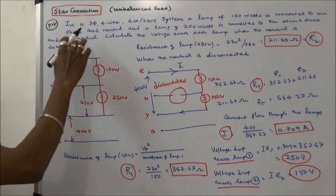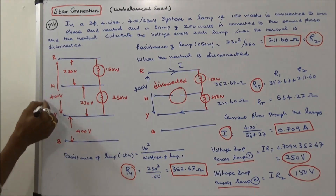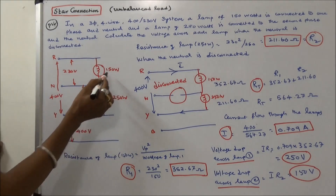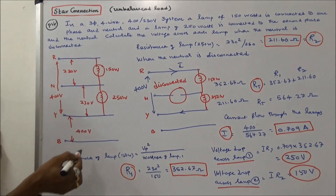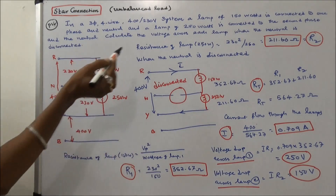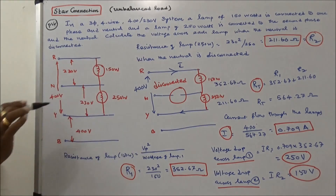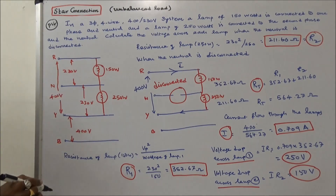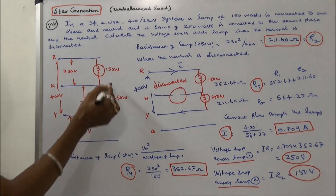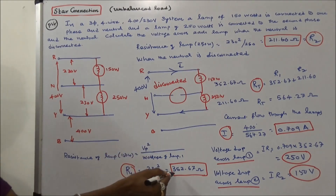Third problem. In a 3-phase 4-wire 400/230V system, a lamp of 150 watts is connected to one phase and the neutral. The question is: calculate the voltage across each lamp when the neutral is disconnected. First, calculate the resistance of lamp 1: R1 equals phase voltage squared divided by wattage, giving 230 squared divided by 150, equal to 352.67 ohms.